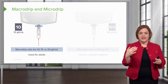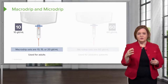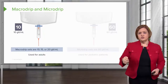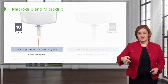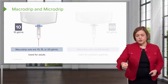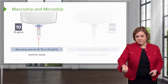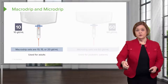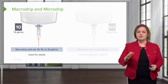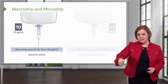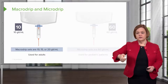Now you notice when I did that counting, it may have been annoying, but sometimes it was slow and sometimes it was fast. That's what happens when you adjust the roller clamp. The tighter the roller clamp, the more pressure it's putting on the tubing, the slower the drops will go. You back off on that roller clamp and you have less pressure on the tubing, the faster the drops will go. You control the drop rate by how tight or how loose that roller clamp is.